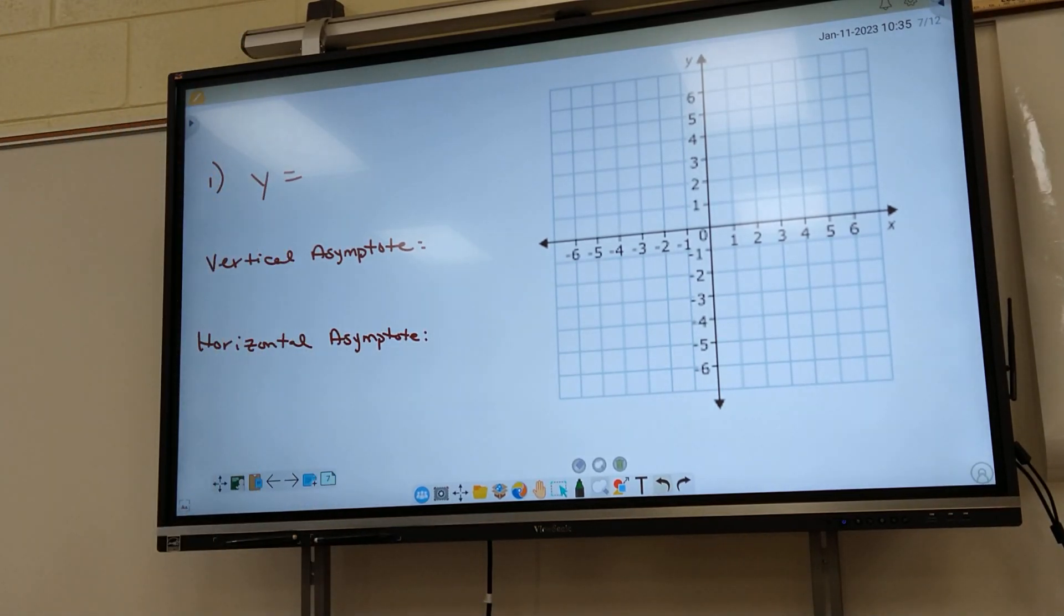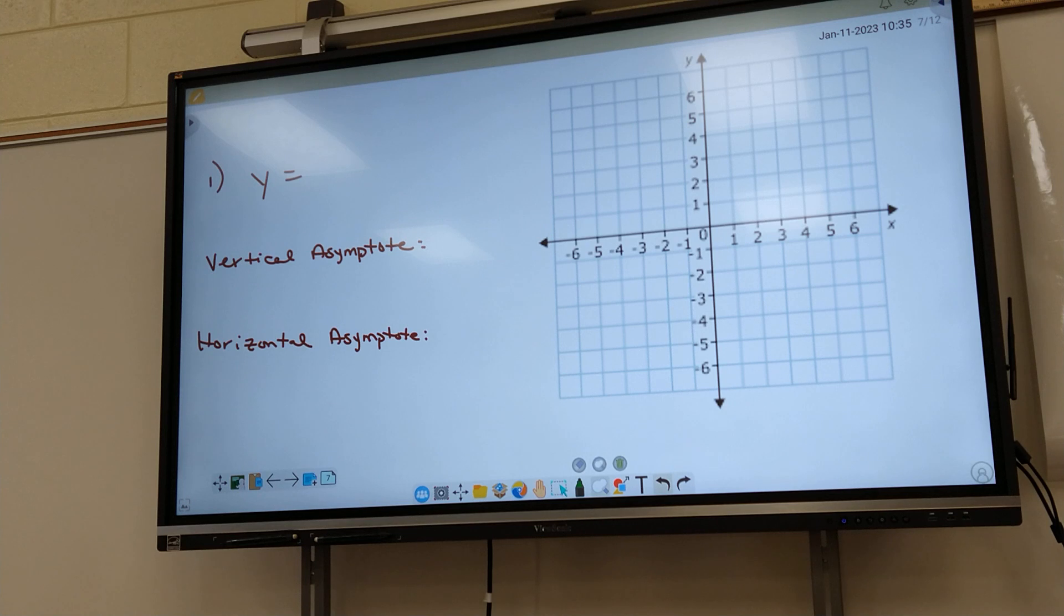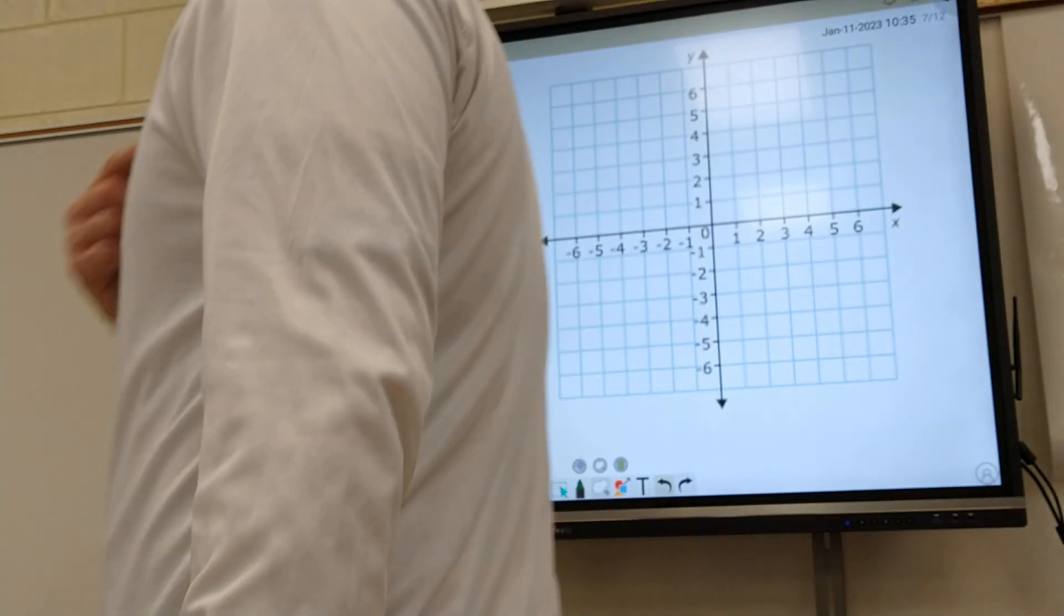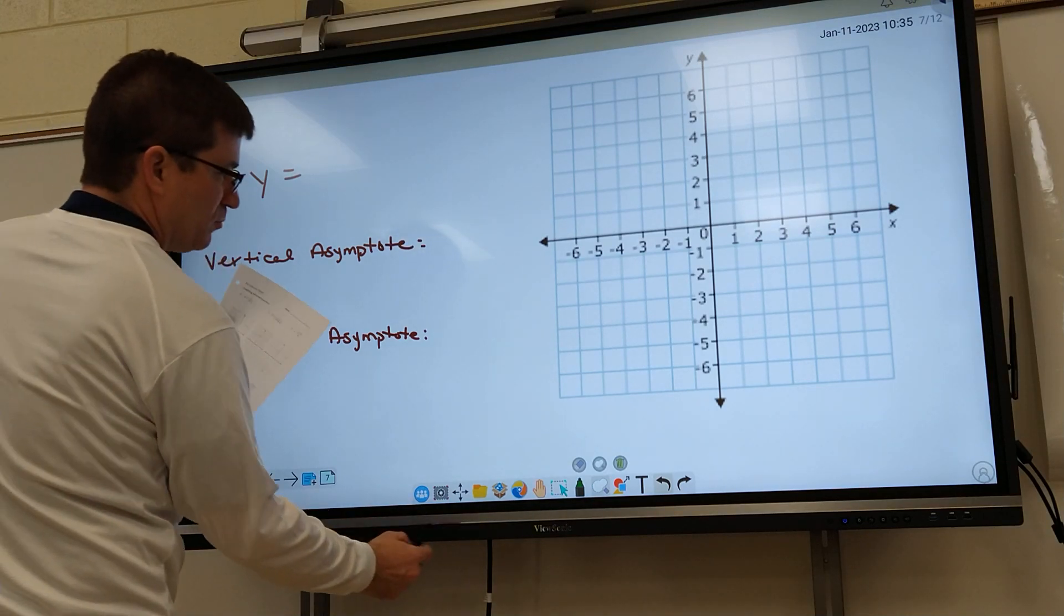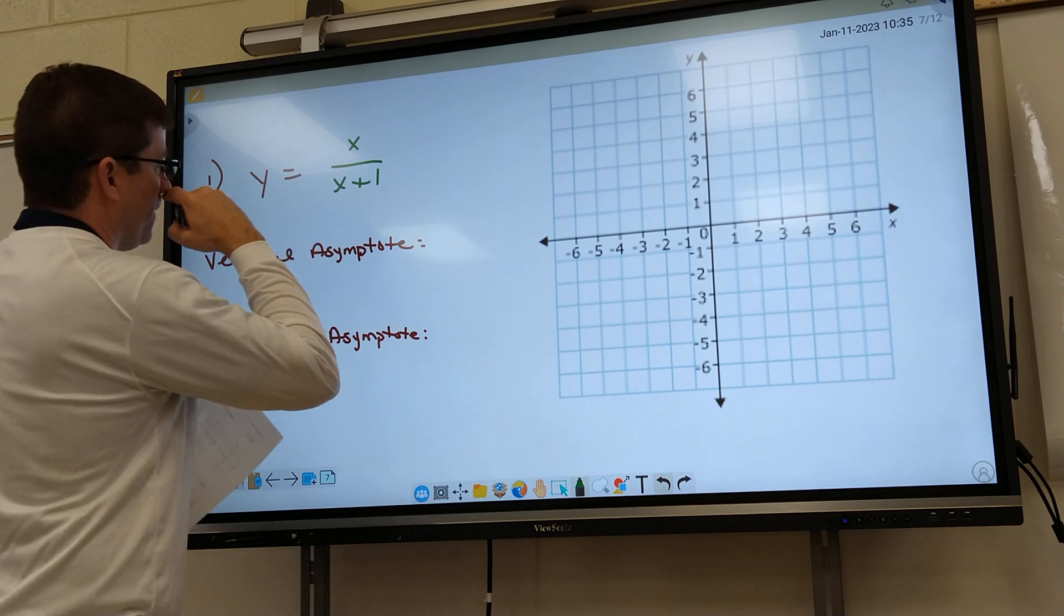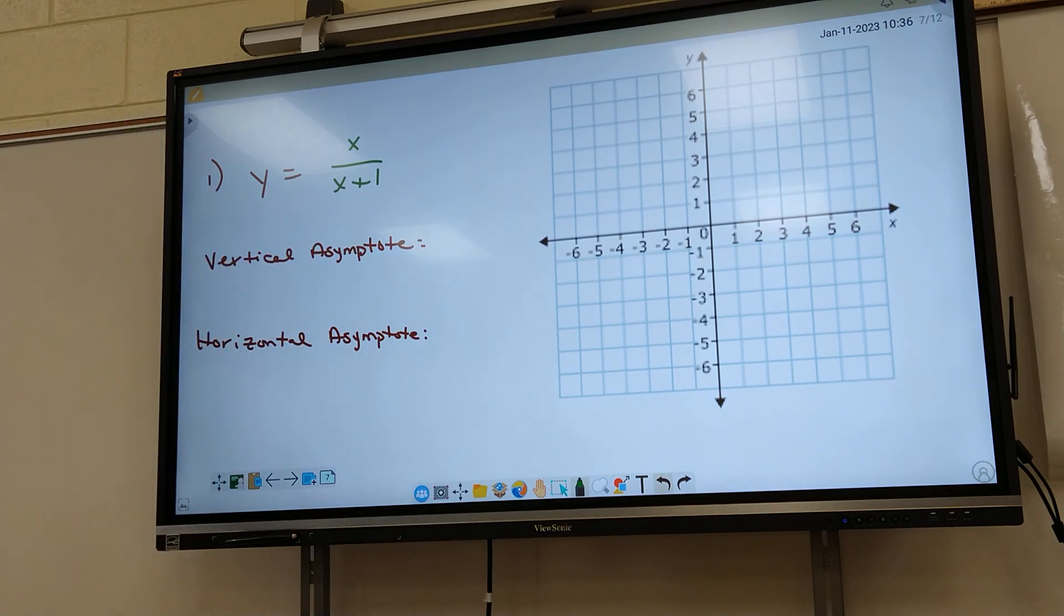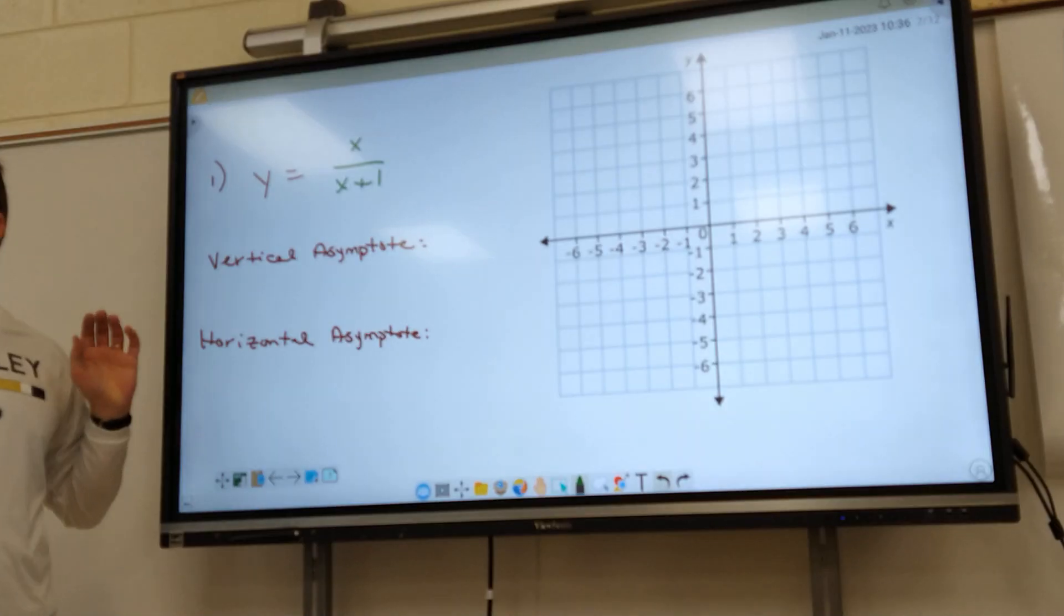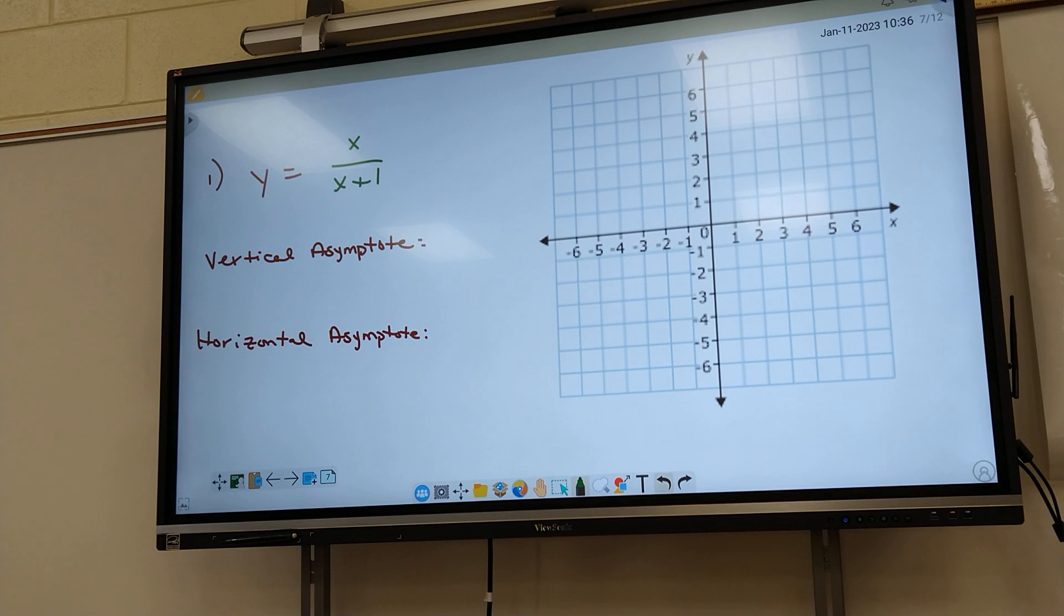Alright, let's look at number one. I don't think y'all did these last year, I could be wrong. We'll get to them as fast as we can. So these are rational functions that we're going to graph. All that means is it's got fractions in them. So on almost every problem, we have to find what they call the vertical asymptote and the horizontal. If you guys just want to write VA and HA, I'm good with that instead of writing out the whole word.